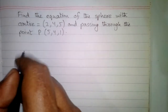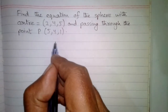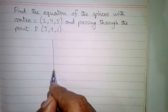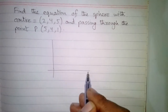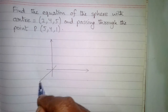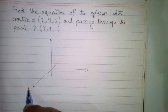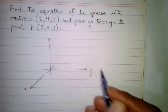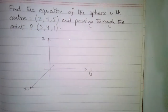First of all we can draw a 3-dimensional space in which this is the x-axis, this is the y-axis, and this is the z-axis.